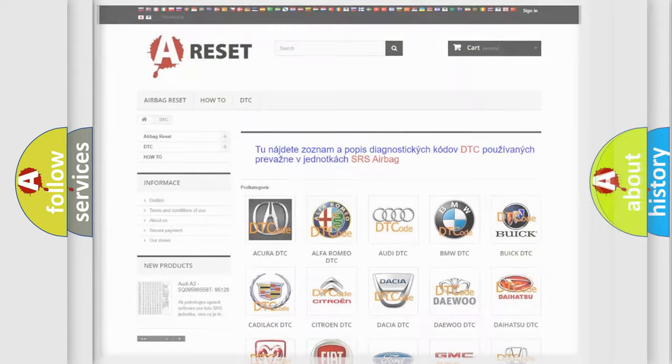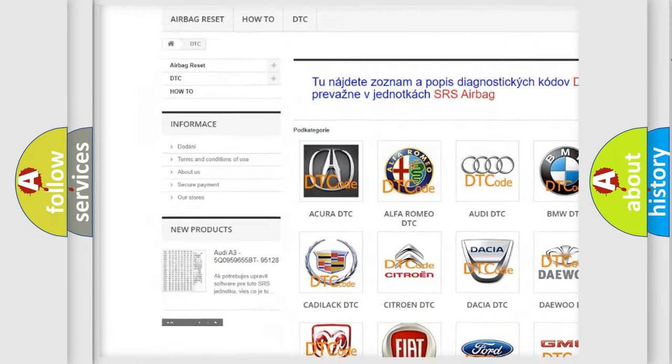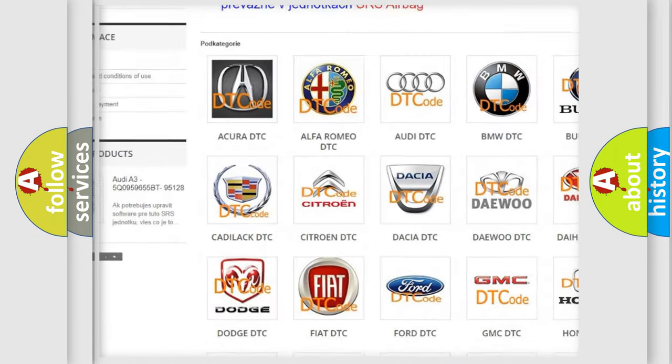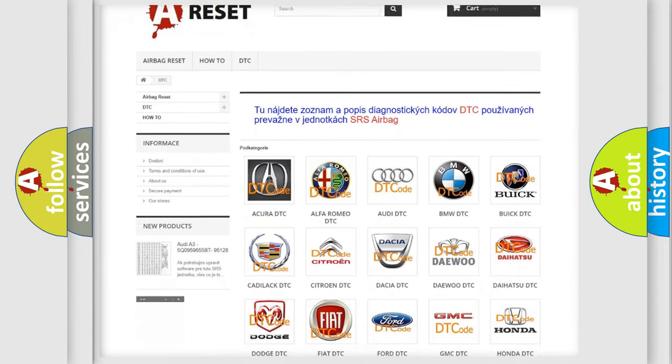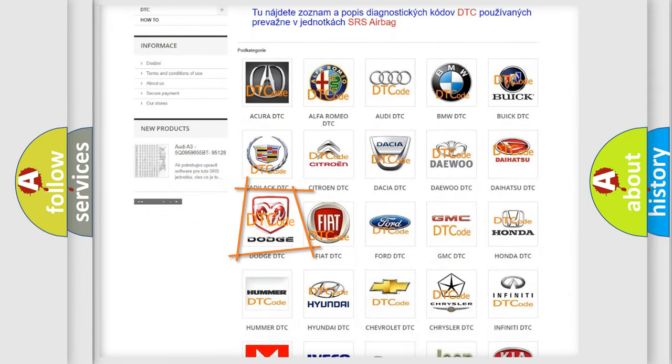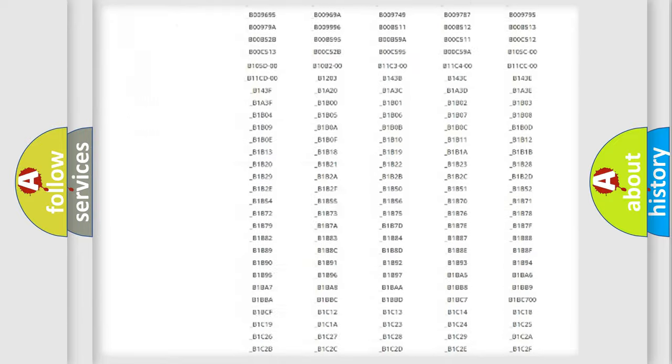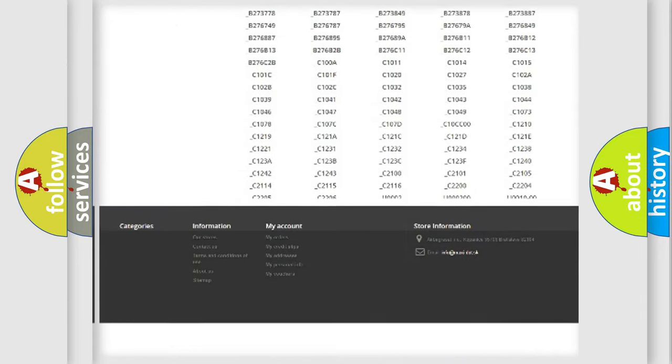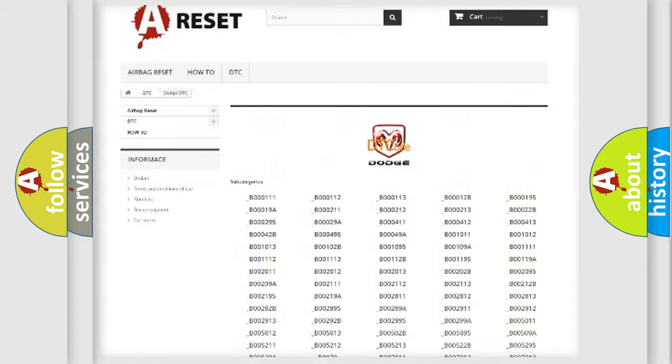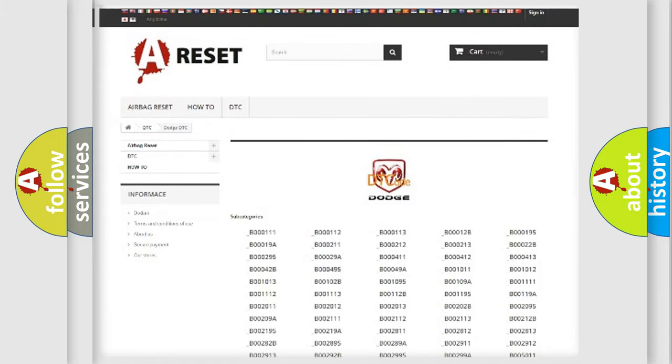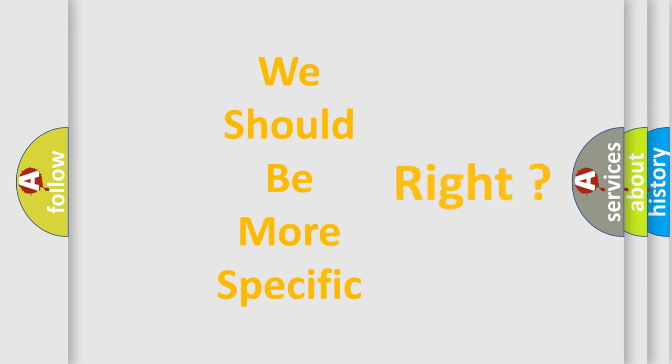Our website airbagreset.sk produces useful videos for you. You do not have to go through the OBD2 protocol anymore to know how to troubleshoot any car breakdown. You will find all the diagnostic codes that can be diagnosed in Dodge vehicles, and also many other useful things.